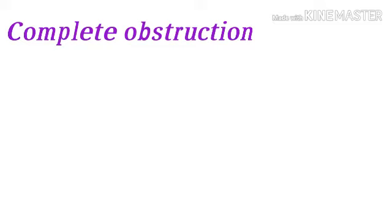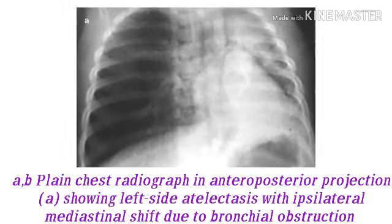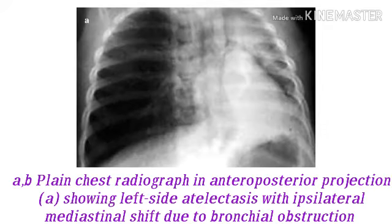With complete obstruction, air distal to the obstruction is absorbed, alveolar spaces close, and the affected lung tissue becomes collapsed and solidified. Physical signs are mediastinal shift to the side of the collapse, dull percussion note, and absent or diminished breath sounds. Radiological features include mediastinal shift to the same side, elevation of the diaphragm on the same side.